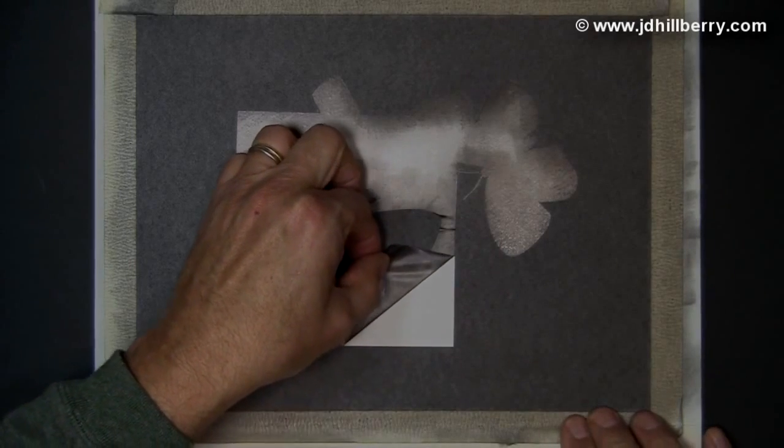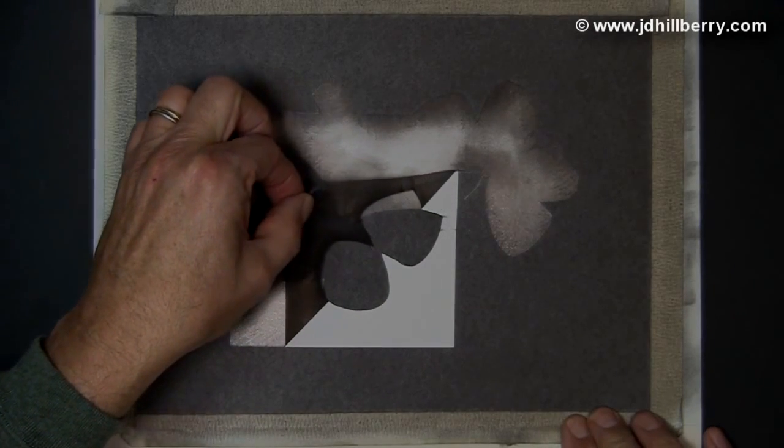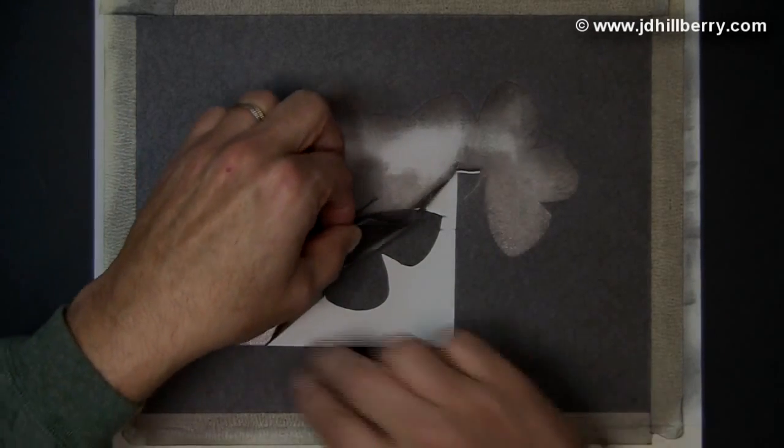I'm pulling off the frisket now so you can see that pure white area there that was masked from all the charcoal.